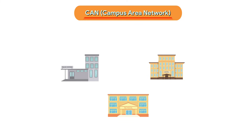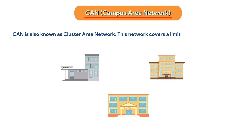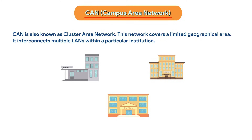CAN (Campus Area Network), also known as Cluster Area Network, covers a limited geographical area. It interconnects multiple LANs within a particular institution such as a library, school, or hostel.